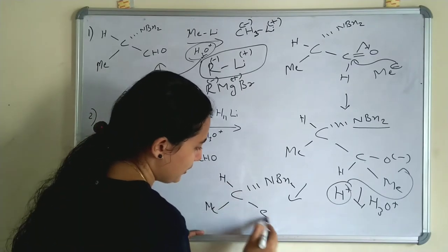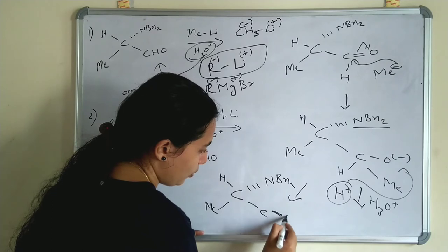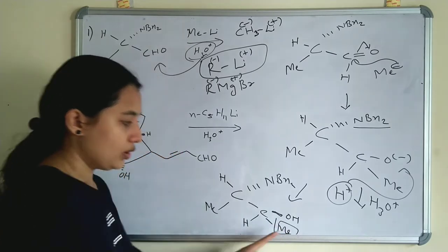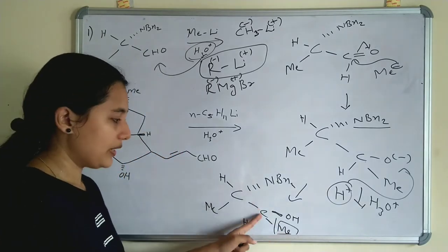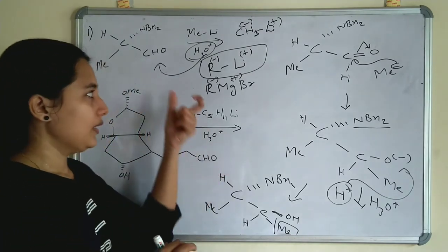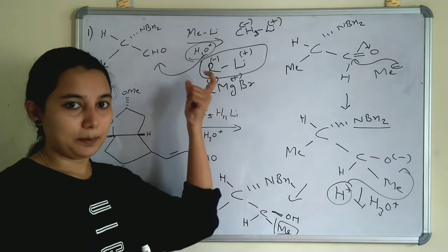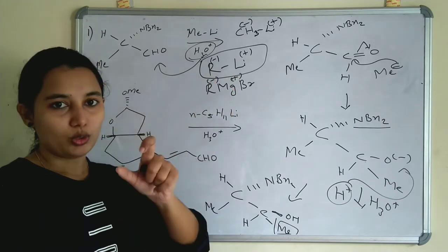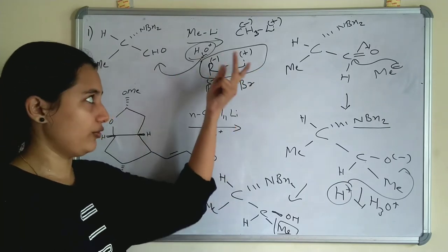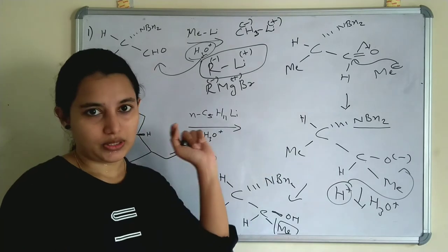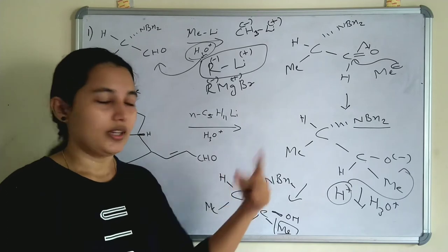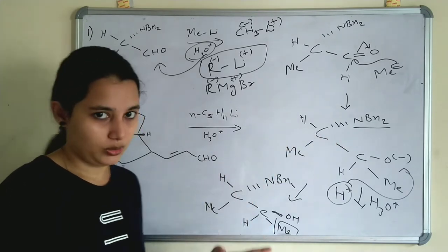The stereochemistry of the product shows OH above the plane, with hydrogen and the alkyl nucleophile (R) also attached to the carbonyl carbon. The nucleophile attaches to the carbonyl carbon. Key points: in Alkylithium, R⁻ is the nucleophile and Li⁺ is the electrophile. When a bulky group is below the plane, OH will be above the plane; if the bulky group is above the plane, OH will be below.